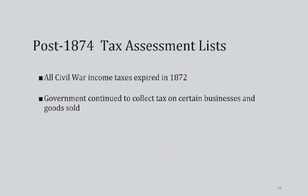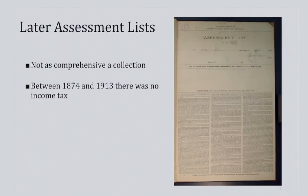The holdings that the National Archives has of these later lists are much less comprehensive than the Civil War era. Unlike the earlier lists, which gathered information on anyone making over $600 a year, these lists were just collecting information on businesses subject to the excise laws. One thing that is great about these business tax assessment lists from this later period, as shown in the 1904 assessment list from Ohio, is that they helpfully include clear definitions of the tax laws they were enforcing.